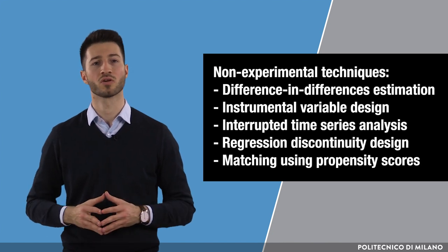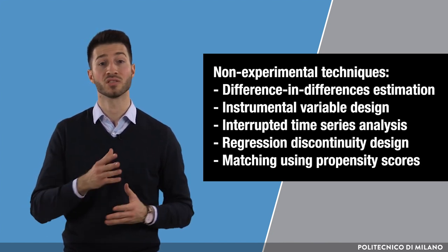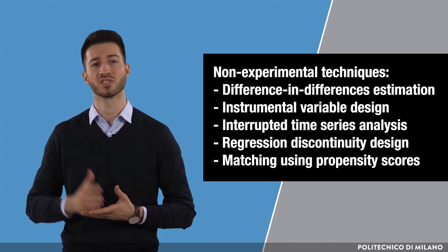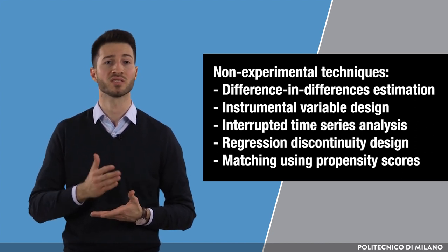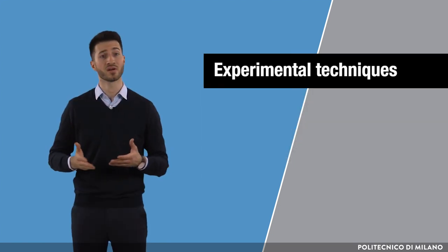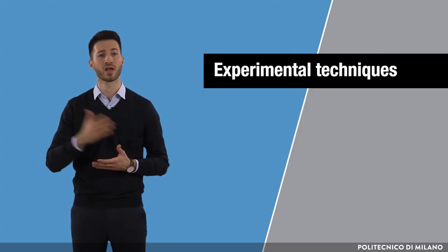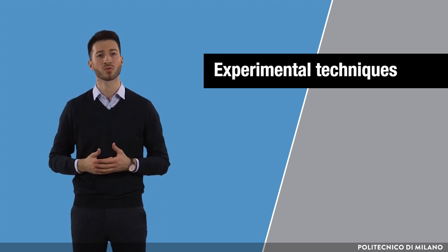So how can we deal with this methodological issue? There is a myriad of techniques at our disposal, mostly building on the econometric approach we have introduced before, such as difference-in-differences estimation, instrumental variable design, time series analysis, regression discontinuity design, and matching using propensity scores. Alternatively, there are experimental techniques such as randomization or natural experiments, but they are more costly and cumbersome to perform. While detailed exploration of these techniques goes beyond the scope of this course, the main takeaway should be that there are methodological challenges in performing quantitative evaluation, yet there are also viable solutions at our disposal to address them.